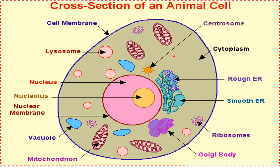Next is the cytoplasm. The cytoplasm is a jelly-like substance present within the cell membrane. The nucleus is also known as the brain of the cell. It is a spherical body surrounded by a double membrane called the nuclear membrane. Within the nuclear membrane lies the nucleoplasm.